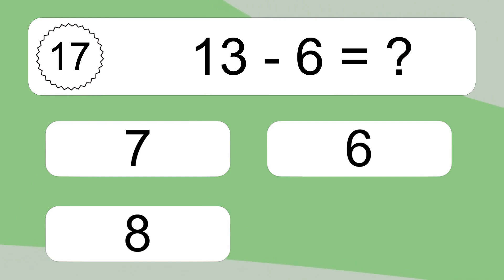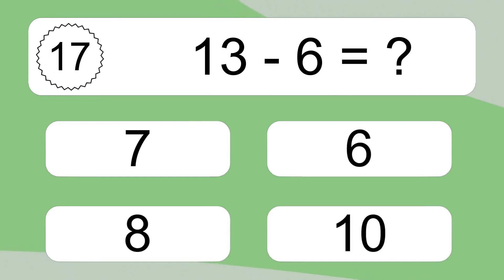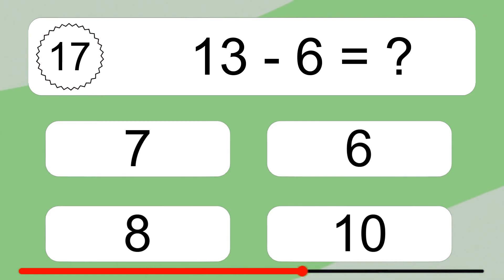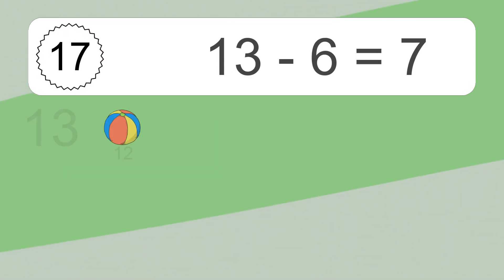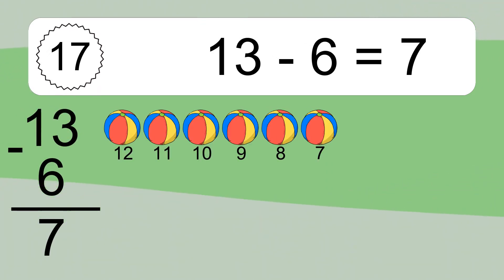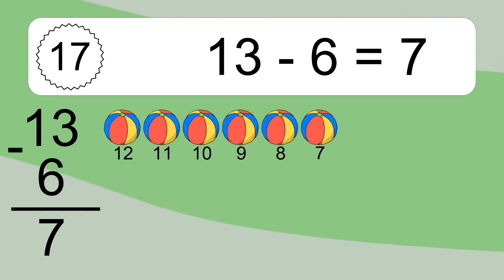13 minus 6 equals what? 13 minus 6 equals 7. Let's count it. 12, 11, 10, 9, 8, 7.